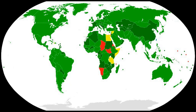The Geneva Protocol prohibits use but not possession or development of chemical and biological weapons. A draft of the BWC submitted by the British was opened for signature on 10 April 1972 and entered into force 26 March 1975 when 22 governments had deposited their instruments of ratification. It commits the 182 states which are party to it as of September 2018 to prohibit the development, production, and stockpiling of biological and toxin weapons. However, the absence of any formal verification regime to monitor compliance has limited the effectiveness of the Convention.